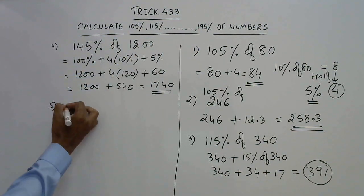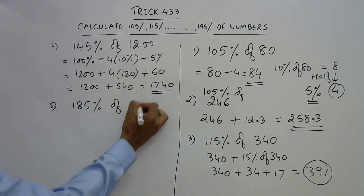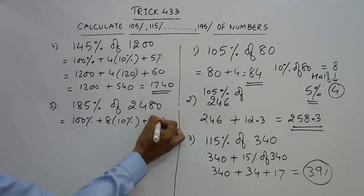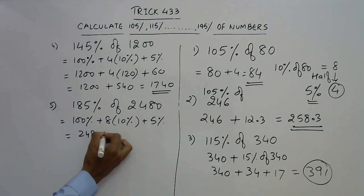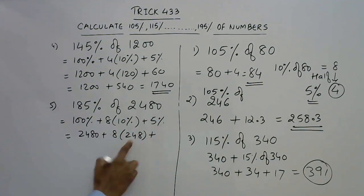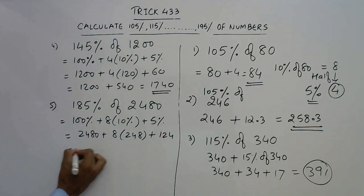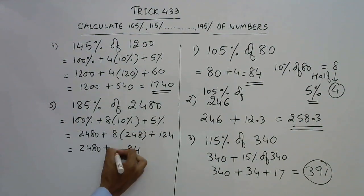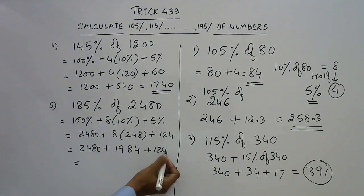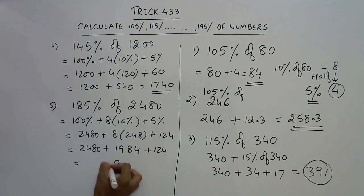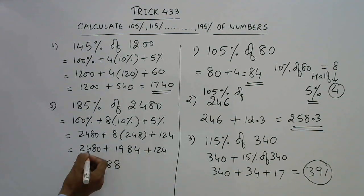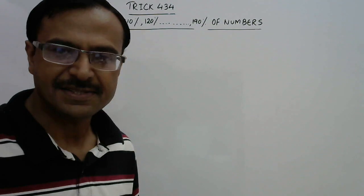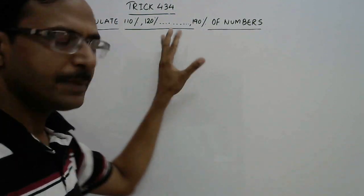For 185% of 2480: break into 100% plus 8×10% plus 5%. 100% is 2480. 10% is 248, so 8×248 = 1984. 5% is half of 248, which is 124. Adding 2480 plus 1984 plus 124 gives 4588. So 4588 is 185% of 2480.